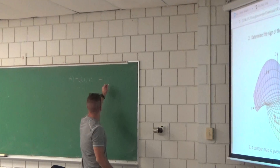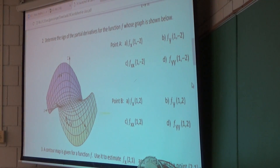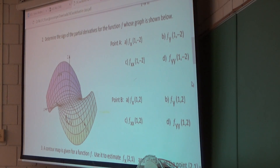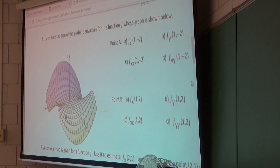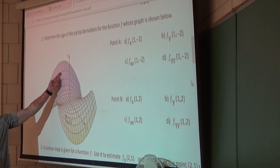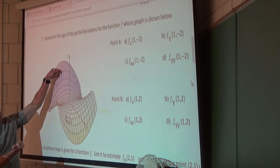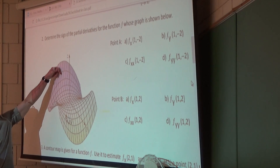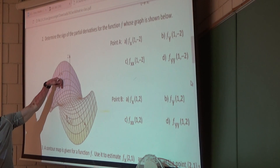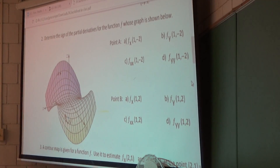Now, what about letter b? We have to find fy at (1, -2). That's the slope of f in the direction of the positive y-axis. If you're on this hill and you move in the direction of the positive y-axis, are you going up or down? Going down — the values of f are decreasing, so fy would be negative as well.